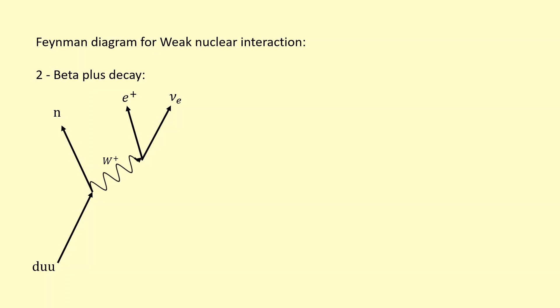You can also represent beta-plus decay using quarks. The proton is written as down, up, up, which makes it easier to show that the up quark is turning into a down quark when the proton turns into a neutron.